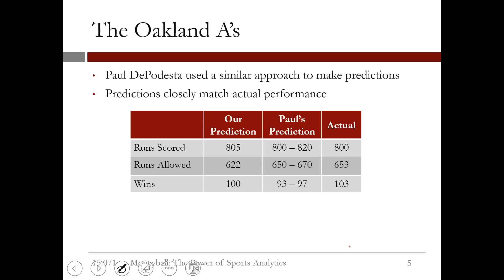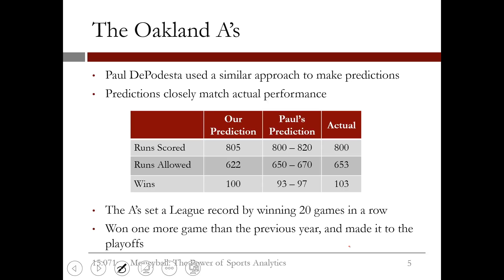These predictions show us that by using publicly available data and simple analytics, we can predict very close to what actually happened before the season even started. It turns out that the A's won a league record in 2002 by winning 20 games in a row, and they won one more game than the previous year and made it to the playoffs once again.